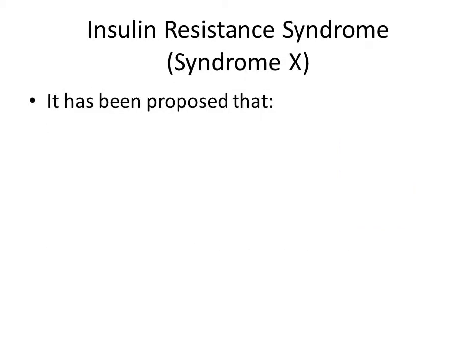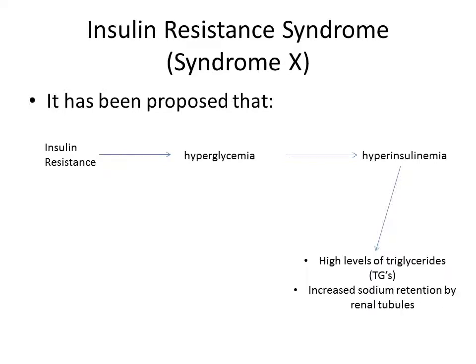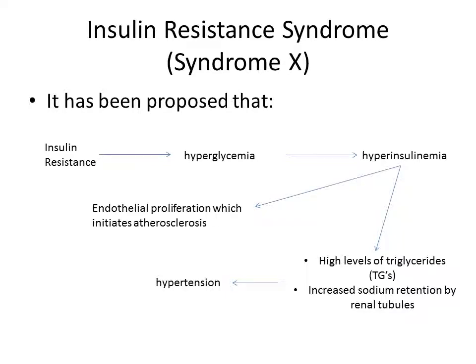The proposed mechanism in insulin resistance syndrome: genetic insulin resistance leads to hyperglycemia, which leads to increased insulin levels — hyperinsulinemia — which leads to increased sodium retention by renal tubules, causing hypertension. Higher levels of insulin also directly lead to endothelial proliferation, which initiates atherosclerosis in the arteries.